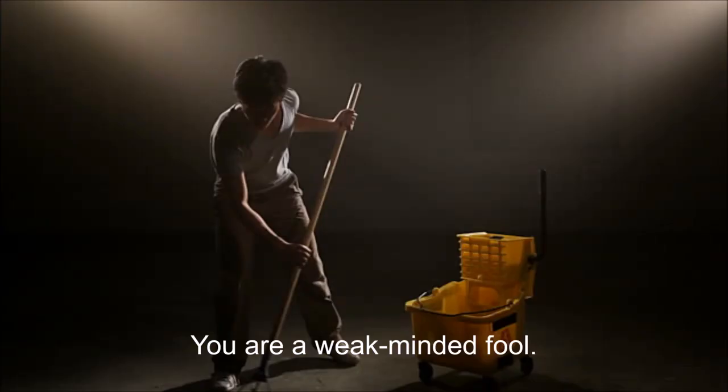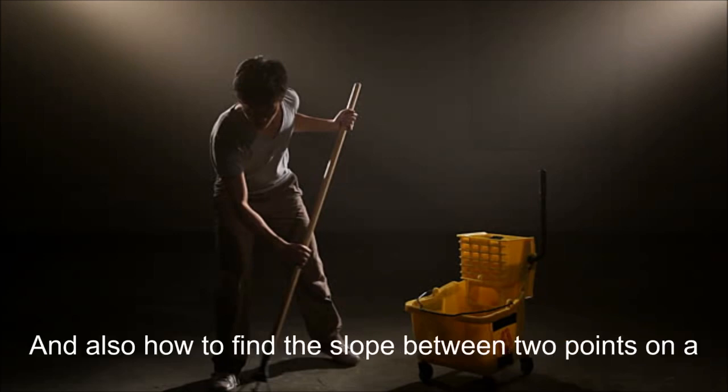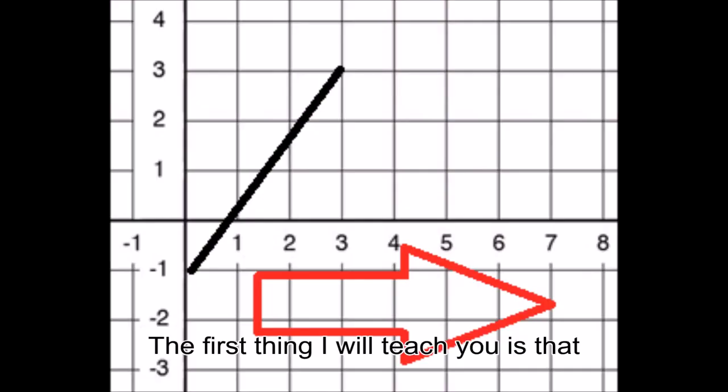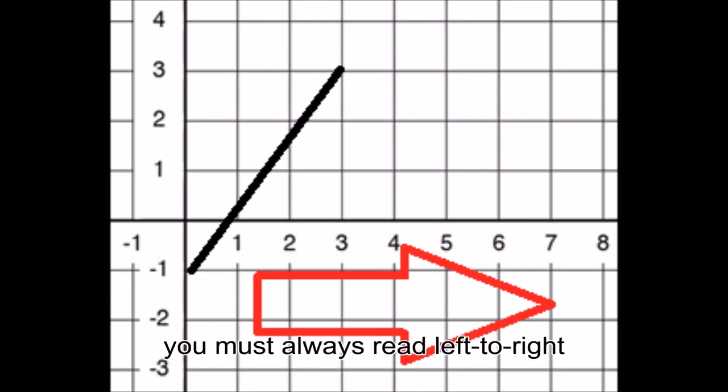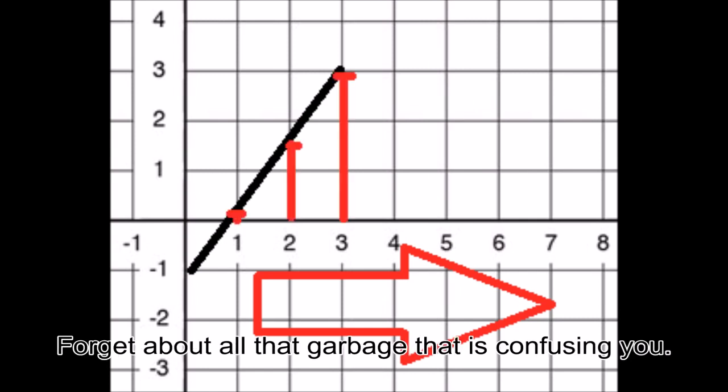You are a weak-minded fool. I am the almighty janitor Jenkins. I know everything about dancing, and also how to find the slope between two points on a graph. The first thing I will teach you is that you must always read left to right. The x-axis increases when you read left to right, forget about all that garbage that is confusing you.